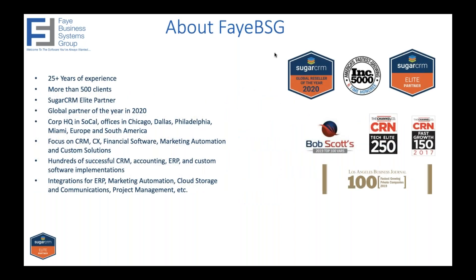Some background on Faye Business Systems Group — why we think we have the right to do a webinar like this today. We have over 25-plus years of experience with more than 500 clients today. We're a Sugar Elite partner. We were the global partner of the year in 2020. We are headquartered in Southern California, but we do have offices across the world in the U.S., in Chicago, Dallas, Philly, and Miami, and across the world in Europe and South America.